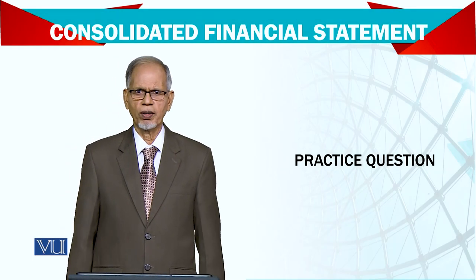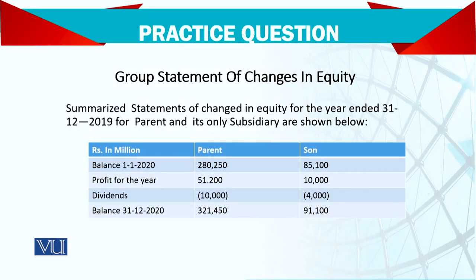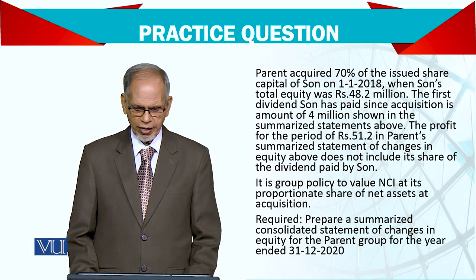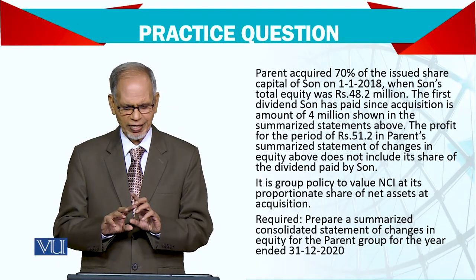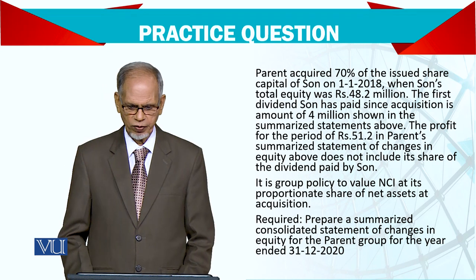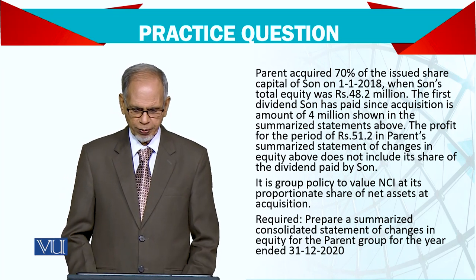Let's see another small question on change in equity — how the adjustments are going to take place in group statement of change in equity. This is parent or son — clearly holding and subsidiary. Opening balance, profit for the year, and dividend. Again, parent acquired 70% of the issued share capital of son. Son's total equity is 48.2 million and the first dividend son paid since acquisition amounts to 4 million.